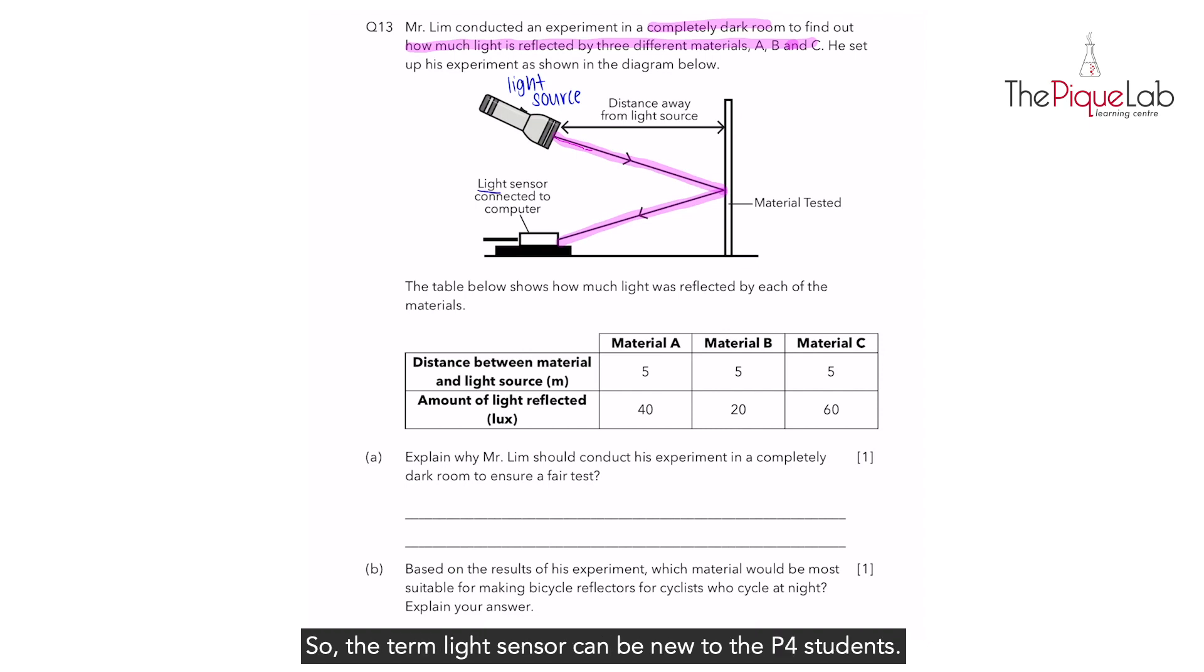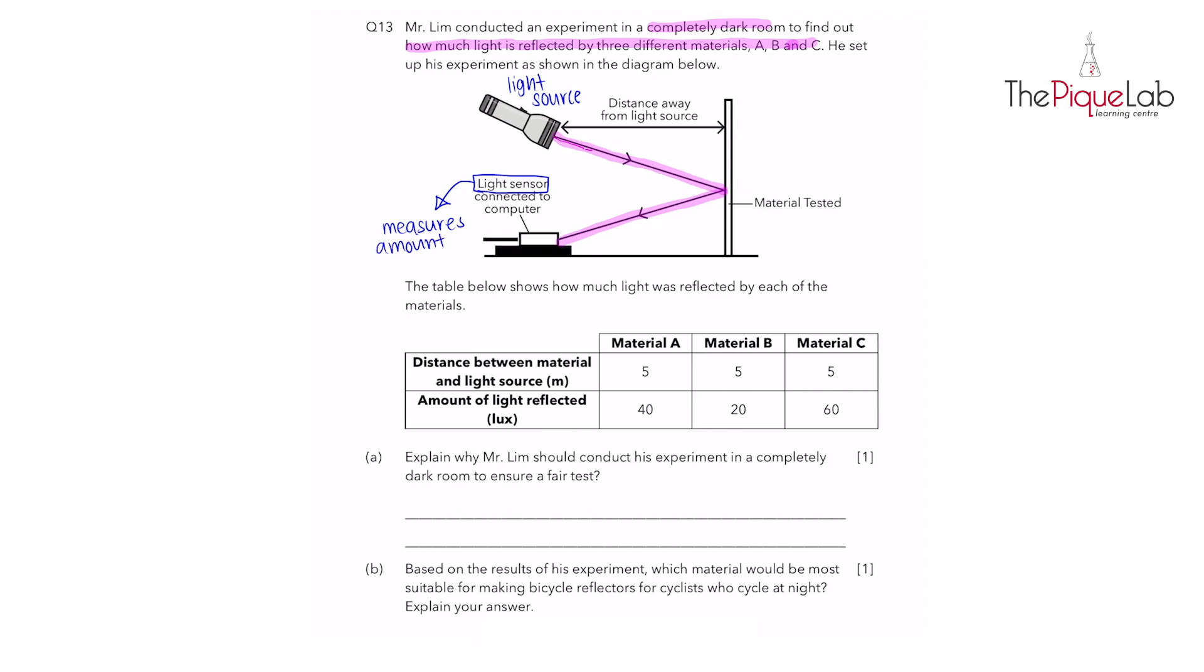The term light sensor can be new to the Primary 4 students. In this case, we tell them that light sensor simply measures the amount of light received. The table below shows how much light was reflected by each of the materials. Let's take a look at the table.